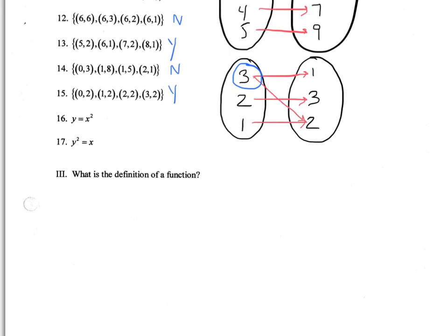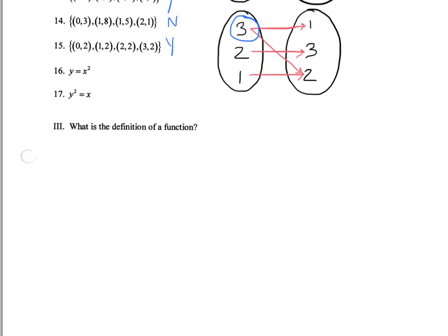And now we've got another representation of a relation for sixteen and seventeen. So sixteen, y equals x squared. Well, you know that that's just this parabola. And you may remember the vertical line test, which tells us that if we draw a vertical line, as long as we don't pass through the relation more than once, we have a function. So this is a yes.